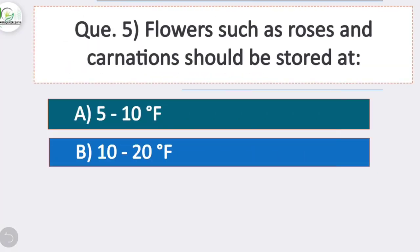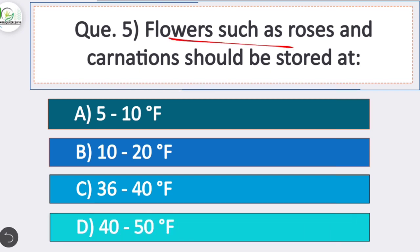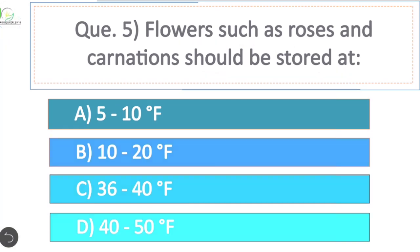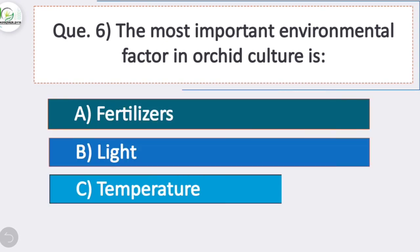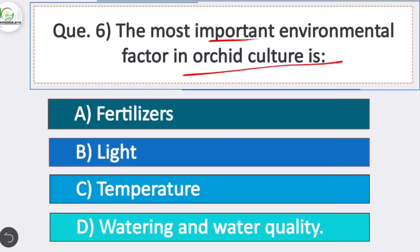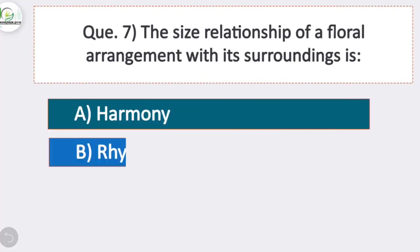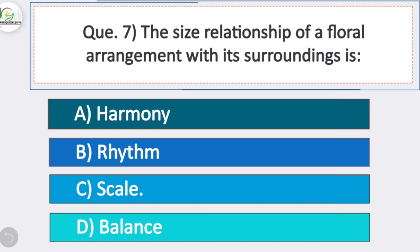Question 5: Flowers such as roses and carnations should be stored at — option C is correct — 36 to 40 degrees Fahrenheit. Question 6: The most important environmental factor in orchid culture is — option D is correct — watering and water quality.